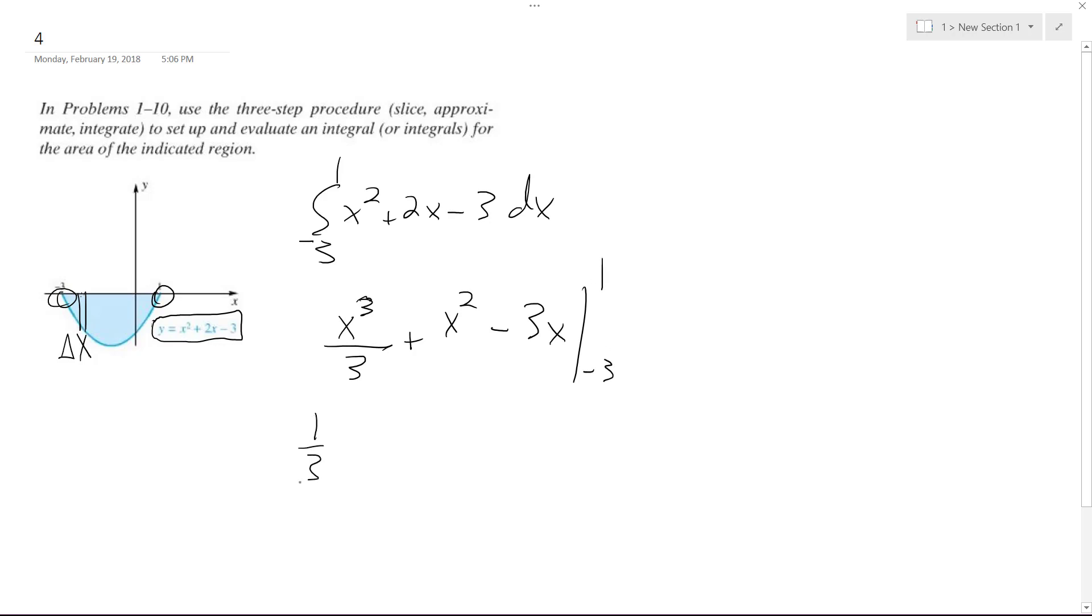So we get 1 third plus 1 minus 3, and we're subtracting, so this becomes negative 27 over 3, which is negative 9 minus 9, or excuse me, plus 9, because this negative 3 squared comes out to be positive 9, and then plus 9 again.